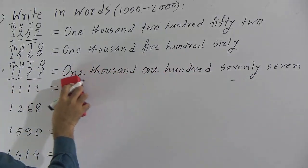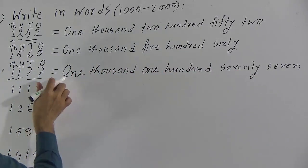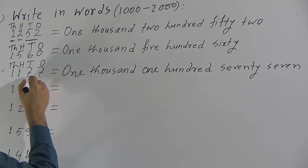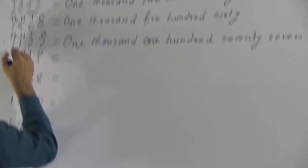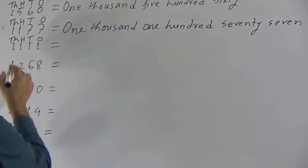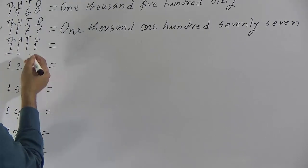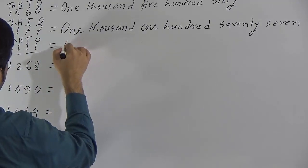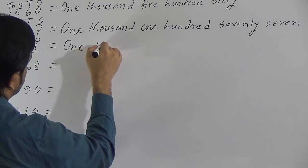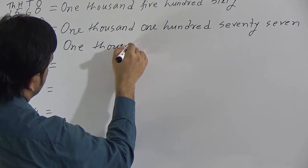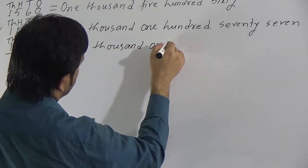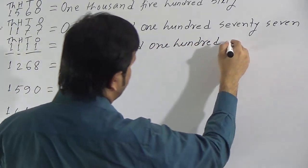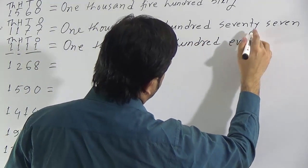Now I will show the next one: 1's, 10's, 100, 1000. So we can say 1111 — one thousand one hundred eleven.